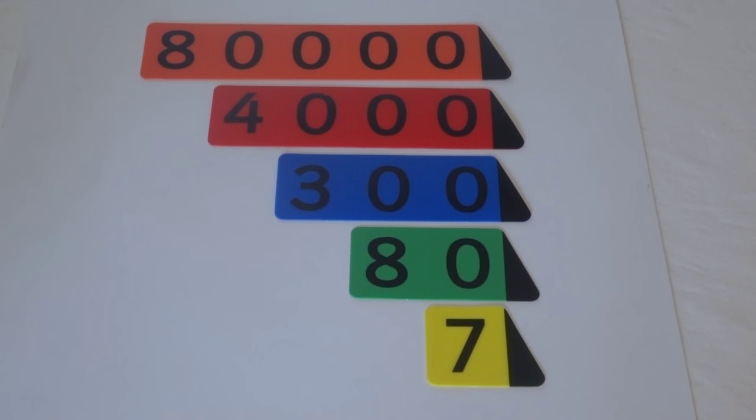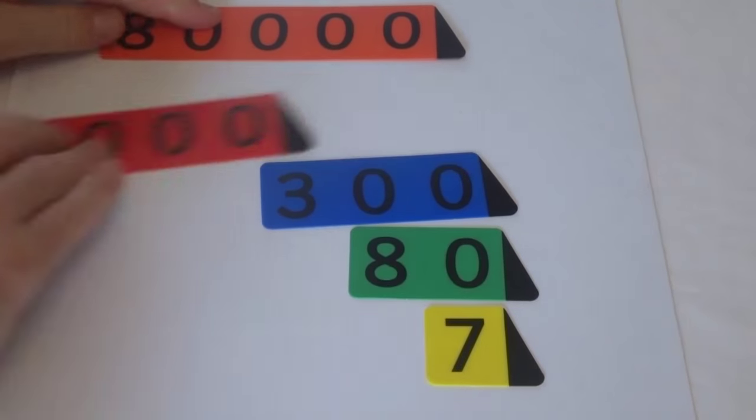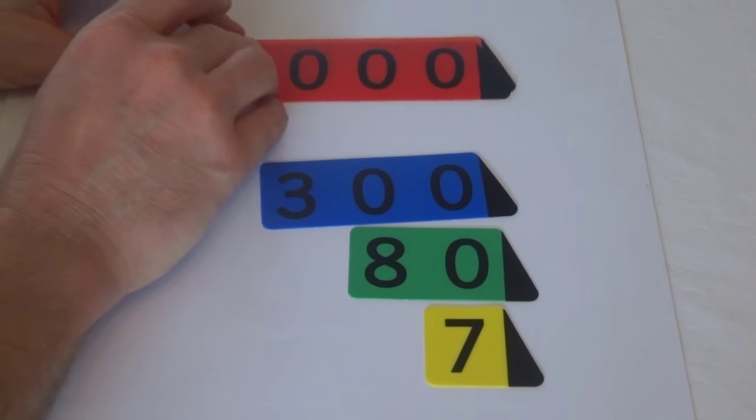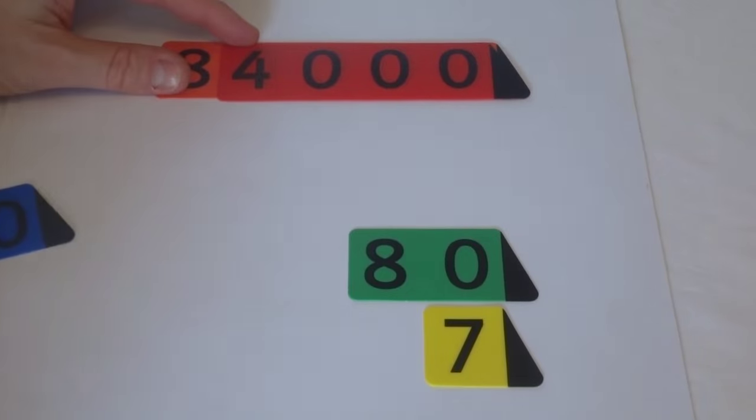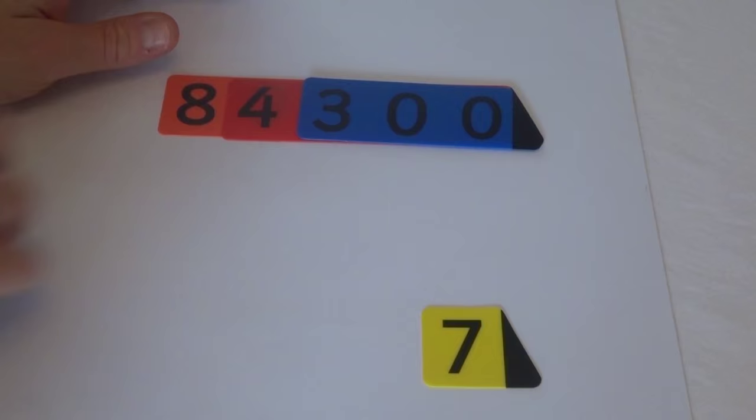You can see here that I've chosen to make a number. The number is going to be eighty-four thousand, three hundred and eighty-seven. You can see just by overlapping cards one on top of the other that you create the number. So there's the eighty-four thousand, there's the three hundred, there's the eighty.